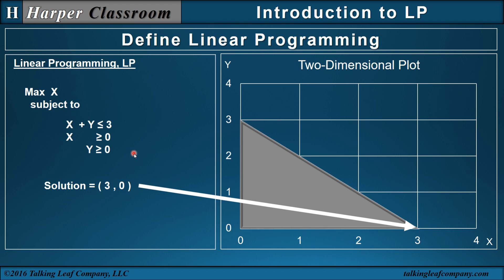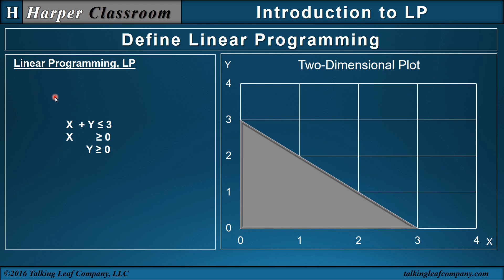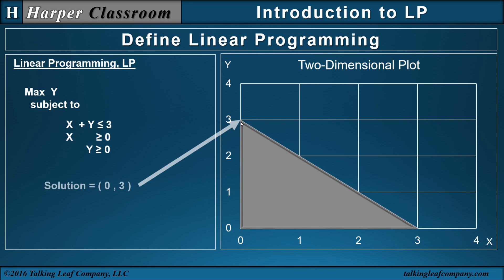There's the definition of a linear program. Let's change this slightly — let's change the x to a y. What is the solution to this LP? The maximum y can be in this region is that point there, so (0, 3) is the solution to this LP.